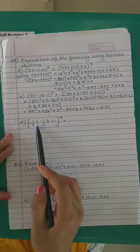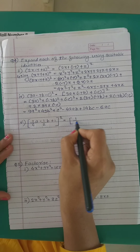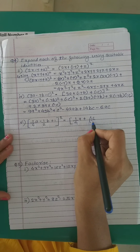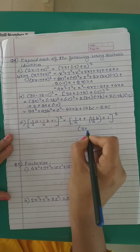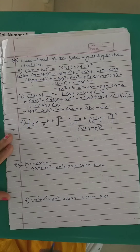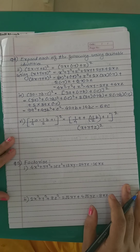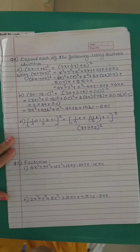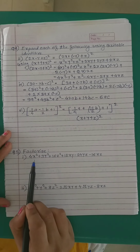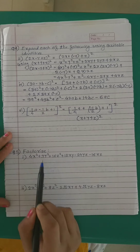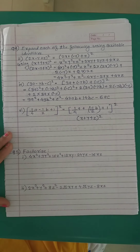The next example (1/4a − 1/2b + 1)² can be written as (1/4a + (−1/2b) + 1)², also a trinomial in the form (x + y + z)². I know you can solve this expansion easily. Now let us start the next example: factorize 4x² + 9y² + 16z² + 12xy − 24yz − 16xz.